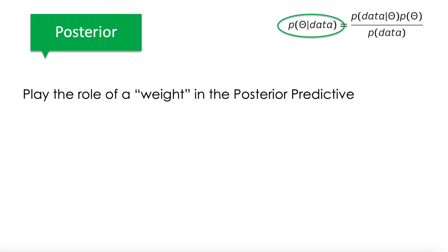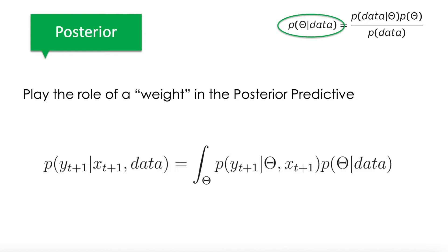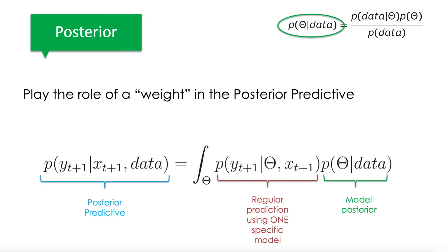The posterior is exactly what we need to add into our posterior predictive — it is the one acting as the weight in the equation we used to finish the previous video. It is calculated by combining likelihood, prior, and marginal likelihood. At the end, the posterior predictive is going to be a prediction done by using all the possible parameters, but every prediction is going to be weighted by our model posterior.